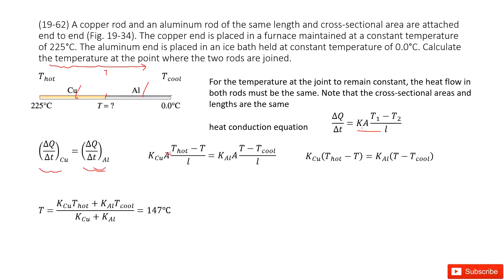We can see A and A can cancel, L and L can cancel. So this equation can be simplified. From this equation, we can get a function for T. In this function, T hot and T cool are given, and K copper and K aluminum are constants. Check your textbook, then you can get the answer there. Thank you.